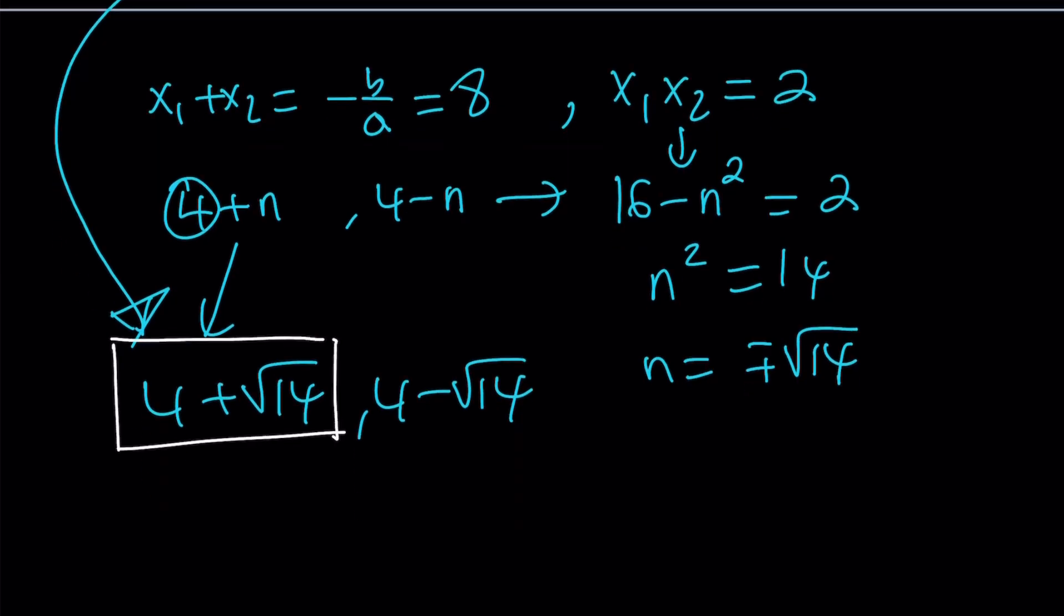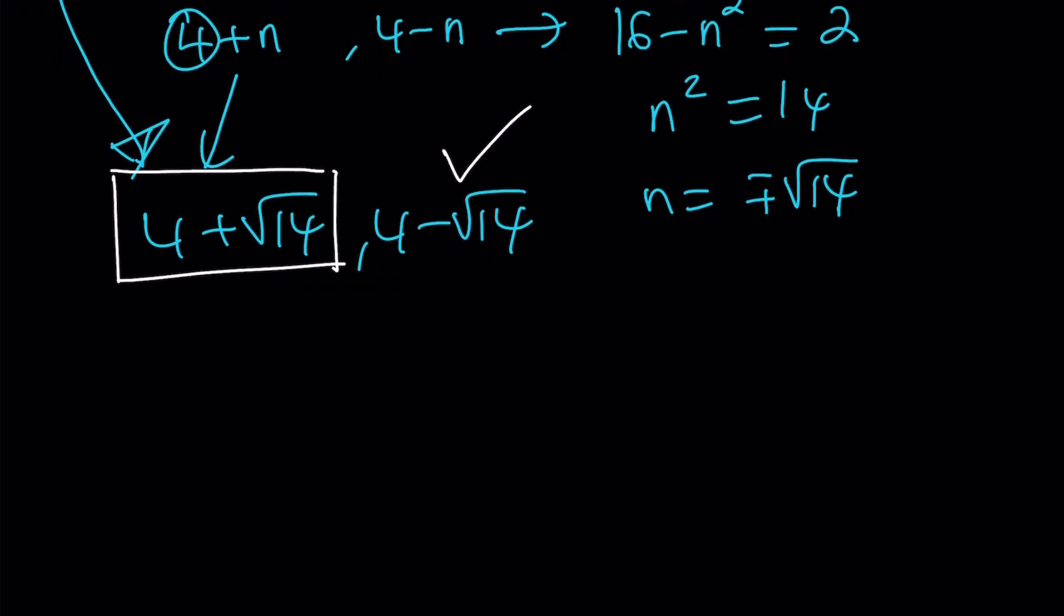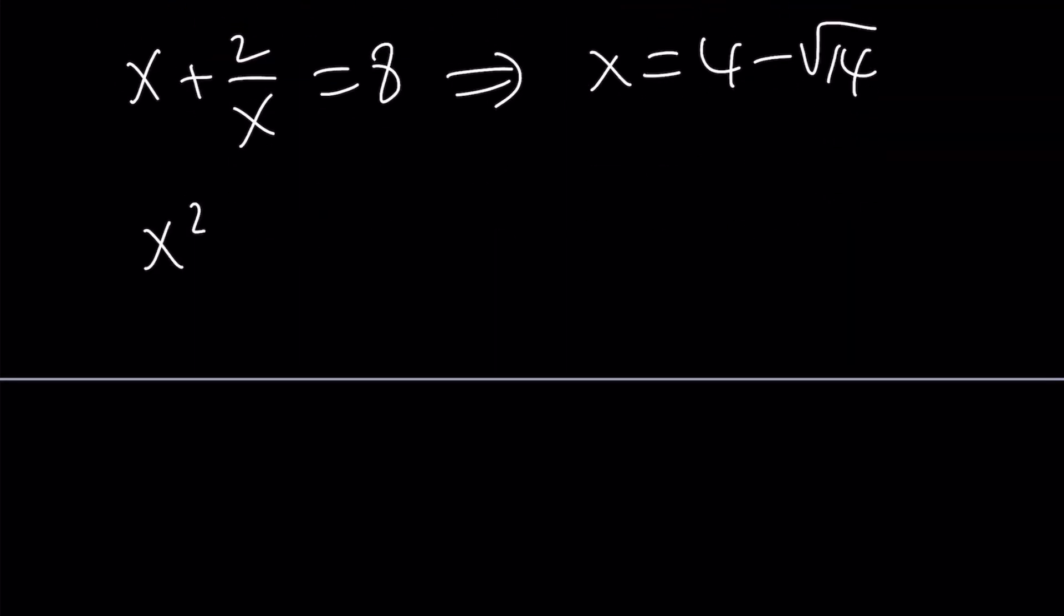Why? That's your job to go ahead and find out. But I'm going to use the second one, not the first one, even though I boxed it. I'm going to use the negative version. Okay? So here's what I'm going to do. x plus 2 over x equals 8. One of the solutions is 4 minus root 14. And now I'm going to evaluate this expression by substituting or replacing x with this. Make sense?